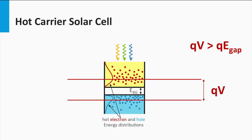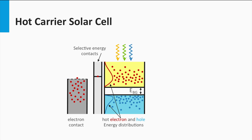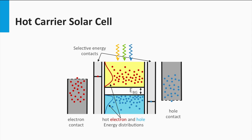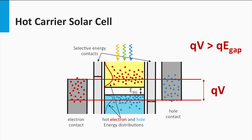A hot carrier solar cell is based on the collection of charge carriers when they are still hot. It means that the energy larger than the band gap energy could be utilized per excited charge carrier. The fundamental challenge is to collect the hot carriers before they relax back to the edge of the electronic bands. Such a concept would require selective contacts — contacts which only select electrons above a particular energy level in the conduction band, and contacts that selectively collect holes below a certain energy level in the valence band. In theory, the band gap utilization could be higher than the band gap itself. The main challenge is to increase the lifetime of the hot charge carriers such that they have time to move from the absorber layer to the selective contacts.